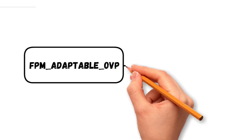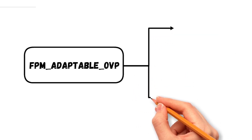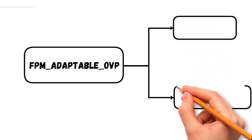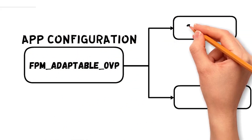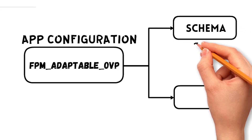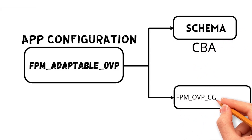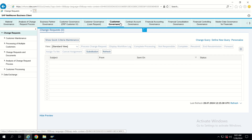FPM Adaptable OVP is the majorly used one because we will use context-based adaptations (CBA). In that there will be two types of component usages. The first one is CBA, which comes under FPM Adaptable OVP. In that there will be a schema — schema means it is like a condition — and then the FPM OVP component.